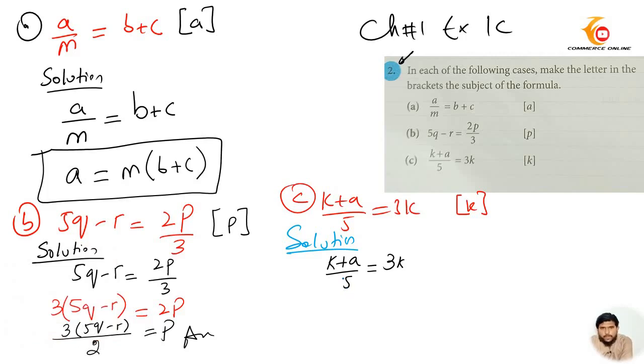Now look closely, 5 is dividing with K plus A. So I will multiply this 5 with 3K. 5 multiplying with 3K. Now 5 times 3 say multiply ho jayega. 5 times 3 is 15K. K plus A will remain here.